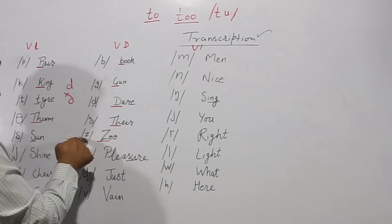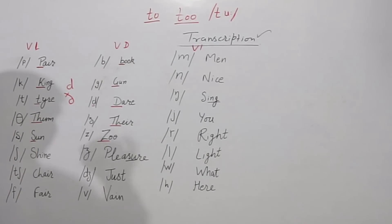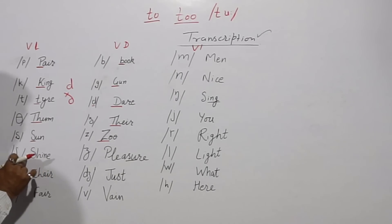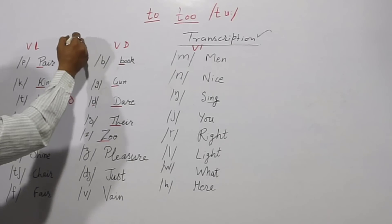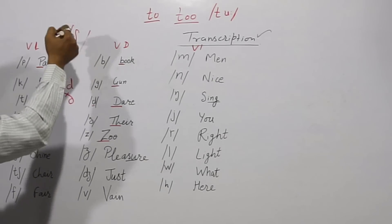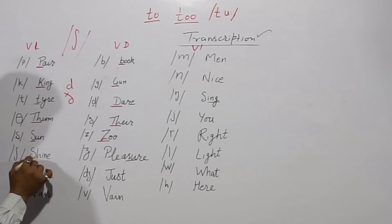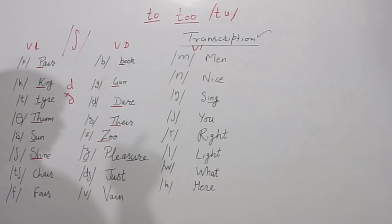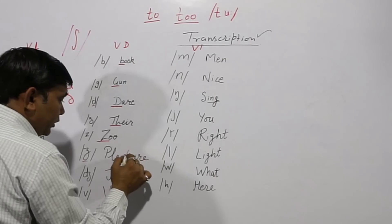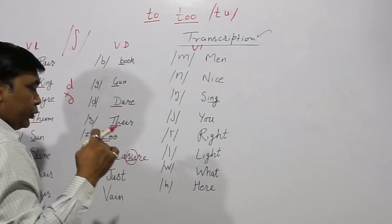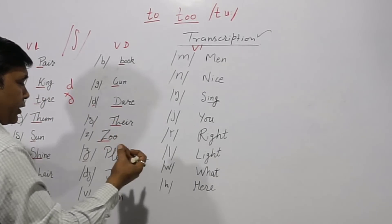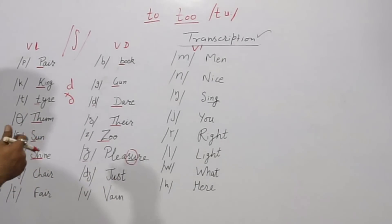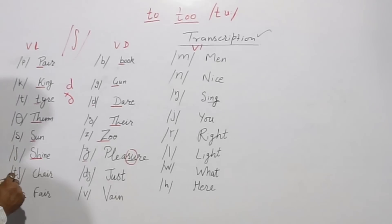Then small /s/ type symbol as in 'sun', and /z/ as in 'zoo' — it is just like a small z in print. This is /ʃ/ — the 'sh' sound — as in 'shine'. And this is /ʒ/ — the 'zh' sound — as in 'pleasure', 'measure', 'pressure'.